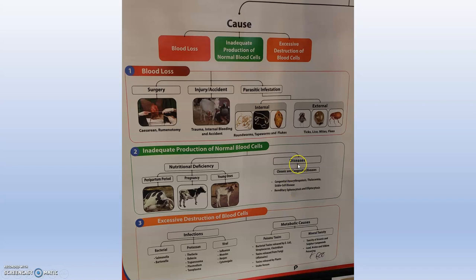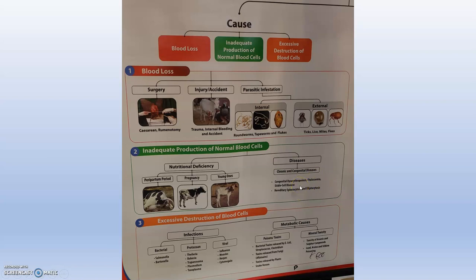Next, disease conditions can result in inadequate production of normal blood cells. These include chronic and congenital diseases, hereditary spherocytosis, elliptocytosis, thalassemia, sickle cell disease, etc.